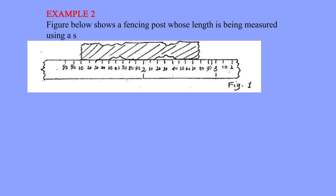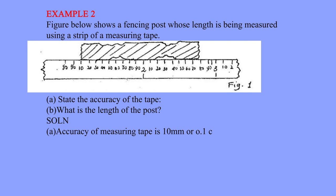A. State the accuracy of the tape. B. What is the length of the post? Solution. A. Accuracy of measuring tape is 10 millimeters or 0.1 centimeters plus 5 centimeters or 0.05 meters. B. Length of post is 1.5 meters.